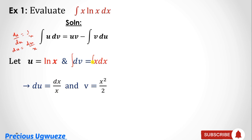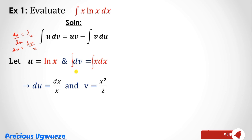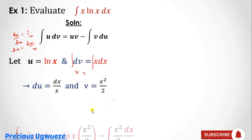Put the integral sign on both sides. Integrating 1 with respect to v gives v, and integrating x with respect to x gives x²/2. So v = x²/2 and du = dx/x.